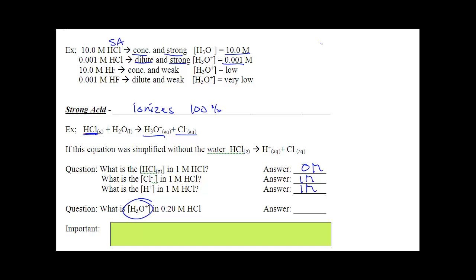So, specifically, what's the concentration of H3O in 0.2 molar HCl? Well, 0.2. So, what that means is the concentration of H3O plus equals the concentration of your strong acid.